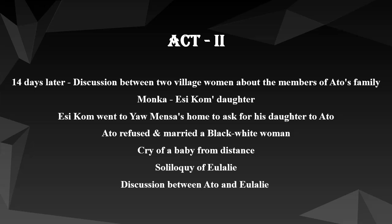They talk about Ato's wife. The second woman reports that Esicom had gone to knock on the door of Yamensa to ask for his daughter to marry her son, but Ato has refused to marry this girl and has instead married a 'black-white woman.' Later, Eulalie is seen giving a long monologue, or soliloquy, after arriving in Africa. She wonders what she would do if she finds out she has made a mistake coming to Africa. She even acknowledges the change of her name from Eulalie Rush to Eulalie Yawson.